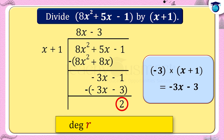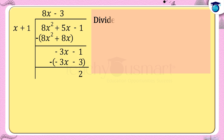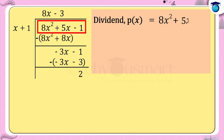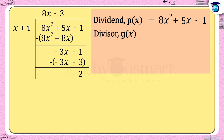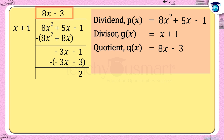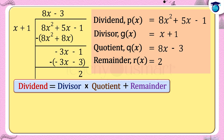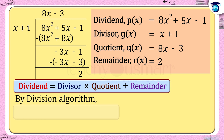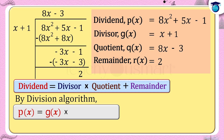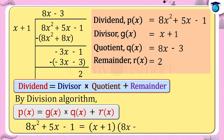The degree of the remainder is less than that of the divisor, hence the division terminates. Dividend p(x) = 8x² + 5x - 1, divisor g(x) = x + 1, quotient q(x) = 8x - 3, and remainder r(x) = 2, which is not equal to 0. By the division algorithm: p(x) = g(x) × q(x) + r(x), that is 8x² + 5x - 1 = (x + 1)(8x - 3) + 2.